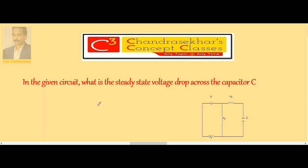In the given circuit, what is the steady state voltage drop across the capacitor C? Once the capacitor reaches steady state, it offers infinite resistance. When we say infinite resistance, there's no need to